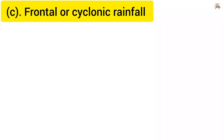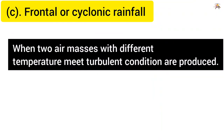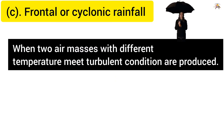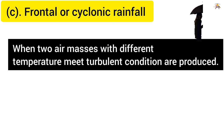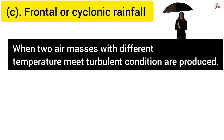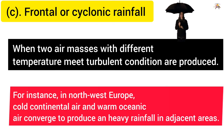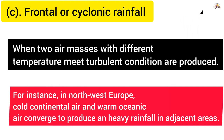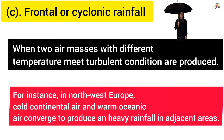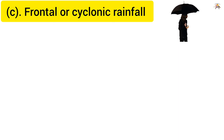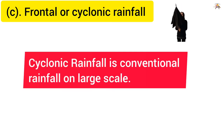Frontal or cyclonic rainfall. When two air masses with different temperatures meet, turbulent conditions are produced. For instance, in North-West Europe, cold continental air and warm oceanic air converge to produce heavy rainfall in adjacent areas. Cyclonic rainfall is convectional rainfall on a large scale.